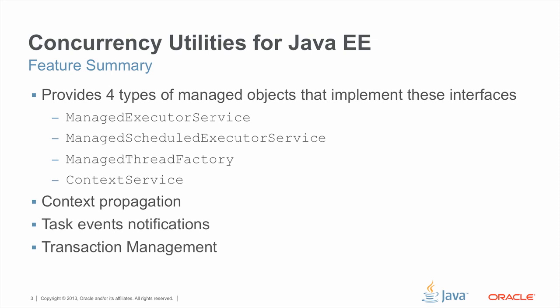The Concurrency Utilities for Java EE specifies four types of managed objects. Each managed object implements one of the following four programming interfaces: Managed Executor Service, Managed Scheduled Executor Service, Managed Thread Factory, and Context Service. We will walk through each of these interfaces and discuss more about managed objects a bit later. In addition to the managed objects, we'll also talk about context propagation, task event notification, and how transactions are being handled.